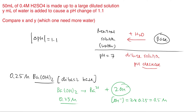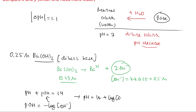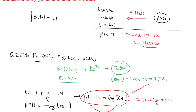The OH⁻ concentration is 0.5 molar. We know pH + pOH = 14, and pOH is the negative log of the OH⁻ concentration. Rearranging, pH = 14 + log[OH⁻]. This is a useful formula to directly convert OH⁻ concentration to pH. Plugging in: 14 + log(0.5) gives us an initial pH of 13.70.